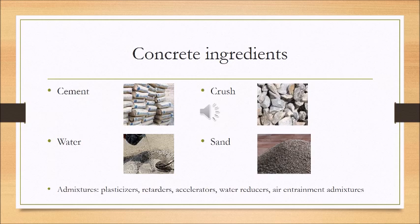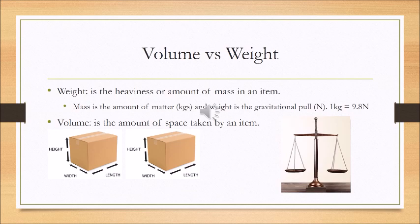Overall, there are 4 ingredients: cement, crush, sand, and water. An important concept to understand before learning how concrete is made is that volume and weight are different.